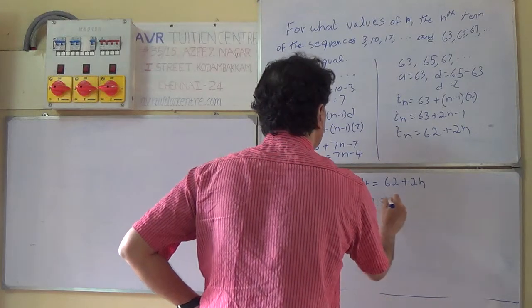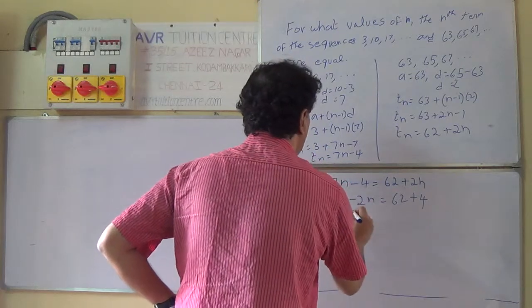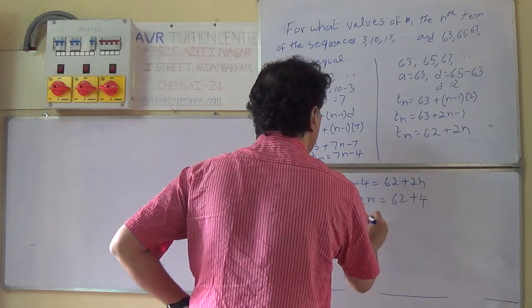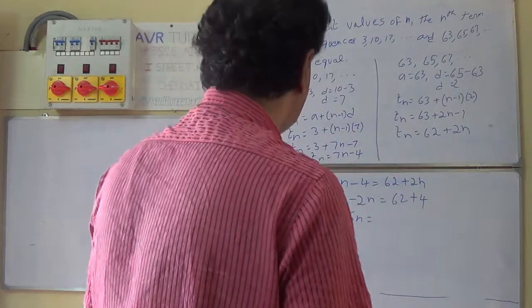2n comes to this side as minus 2n. 62 plus 4. 7n minus 2n is 5n equals 66.